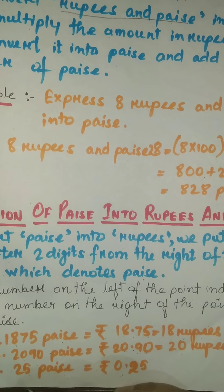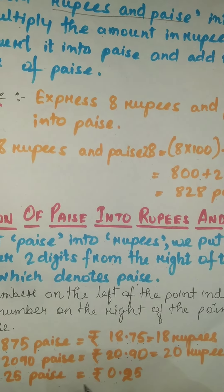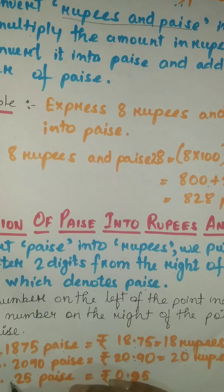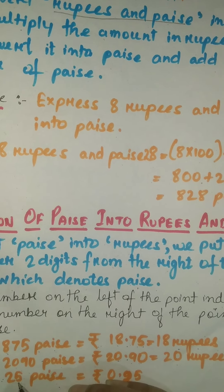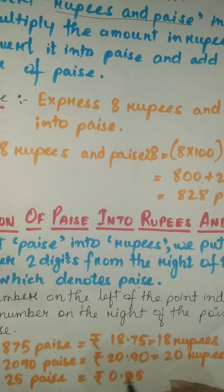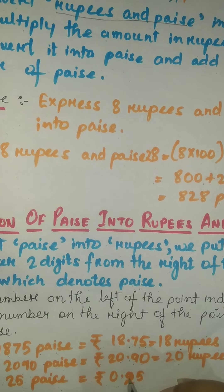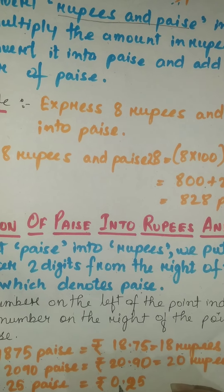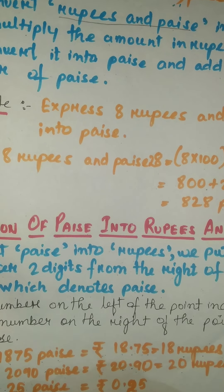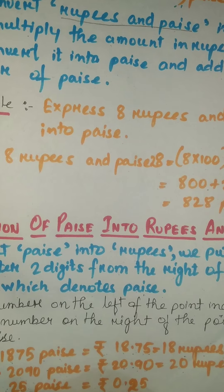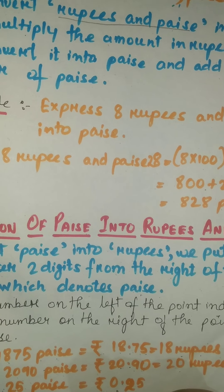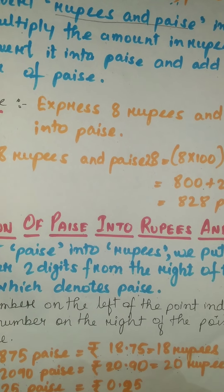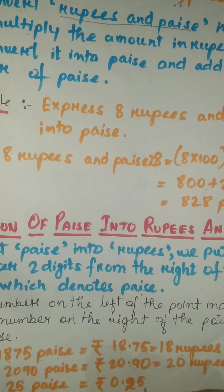Next, 25 paise: here only paise is given, no rupees value. We place a decimal point before 25, and since there are no rupees, we write zero in the rupees place. So the answer is ₹0.25.